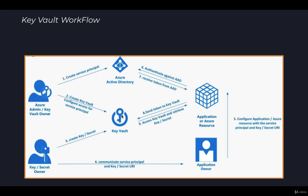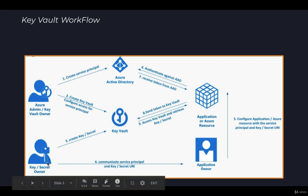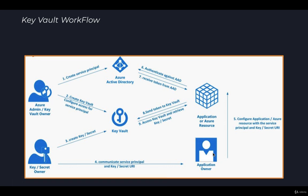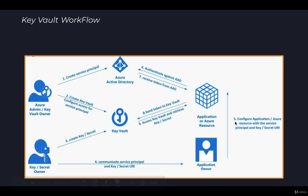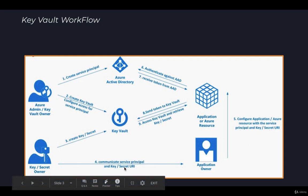Once the service principal is created and access is provided to the Key Vault, in the third step the secret owner creates a secret within the Key Vault. Once that secret is created, in the fourth step the secret owner communicates the service principal and the key or secret URI to the application owner. At this point, only the URI is shared — the keys themselves are not given to the application owner or developer. Even if someone obtains the URI, they won't be able to get the keys because the application must be registered with Azure AD.